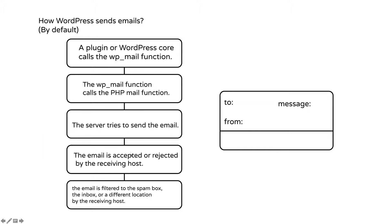The next step is that the email is either accepted or rejected by the receiving host — either the server is successful at sending the email or it isn't. And the very last step happens on the receiving host: the email is filtered — either to the spam box, the inbox, or another location, for example, the promotions section on Gmail. This is the default route that WordPress takes.